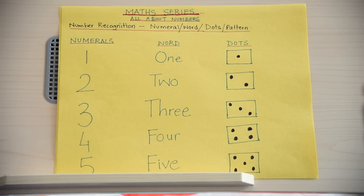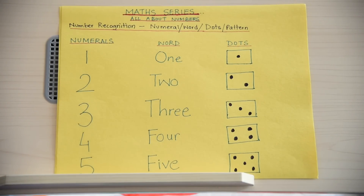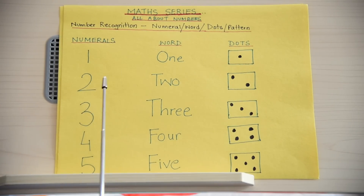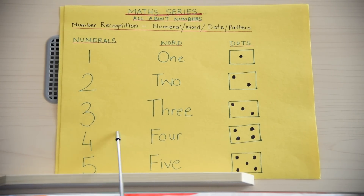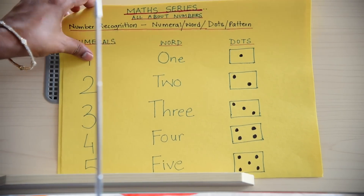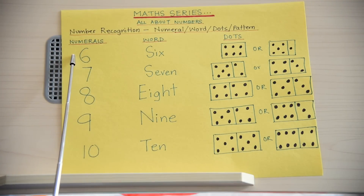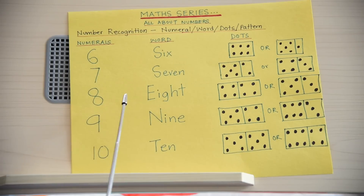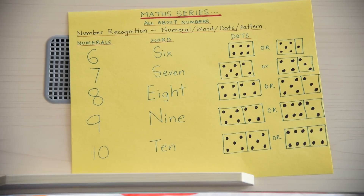Ishaan, do you recognize these numerals, words and dots? Yes. Let's get started. One, two, three, four, five, six, seven, eight, nine, ten. Great job!